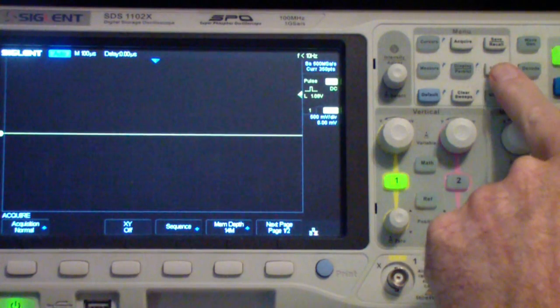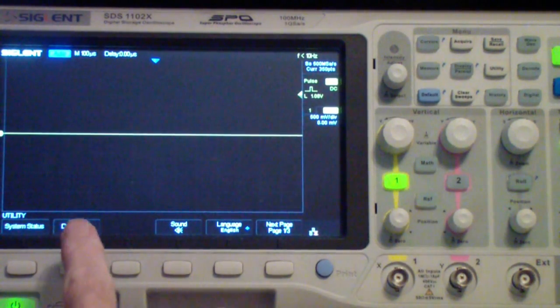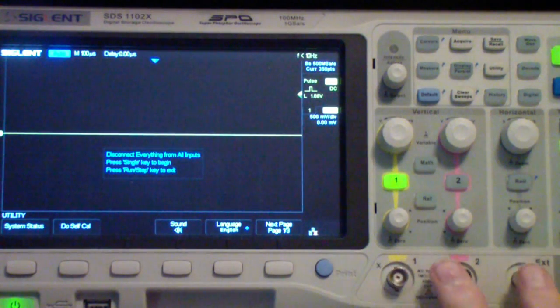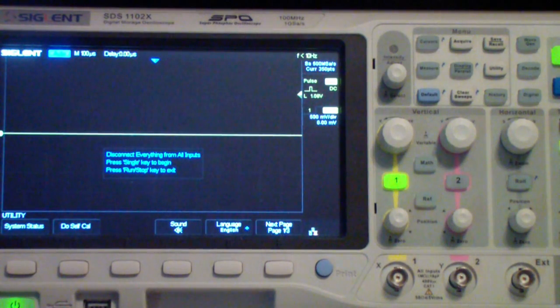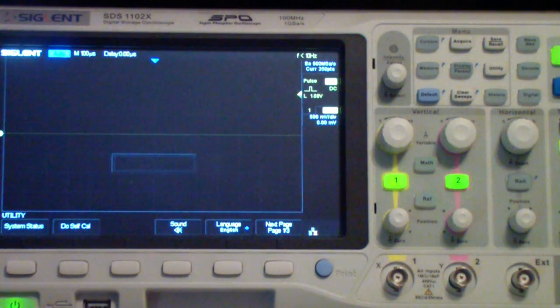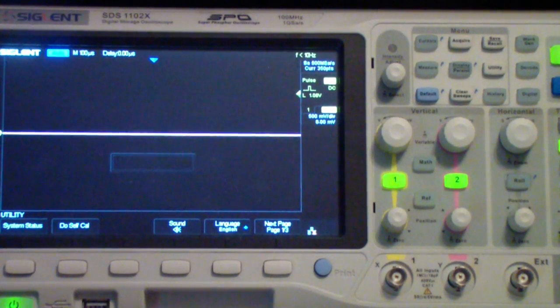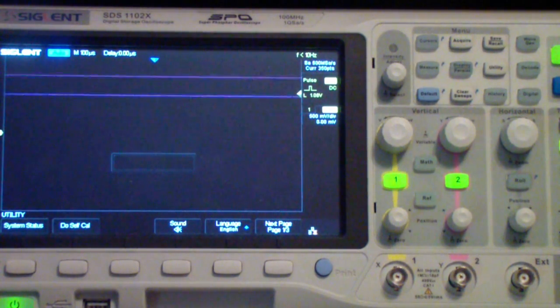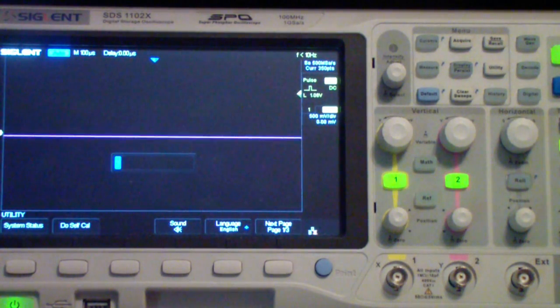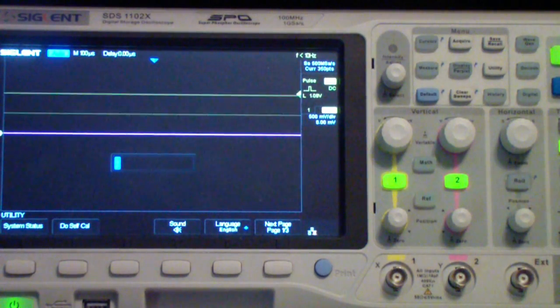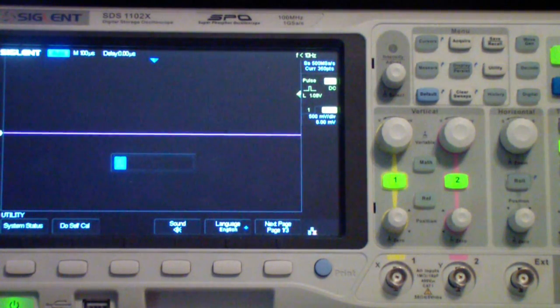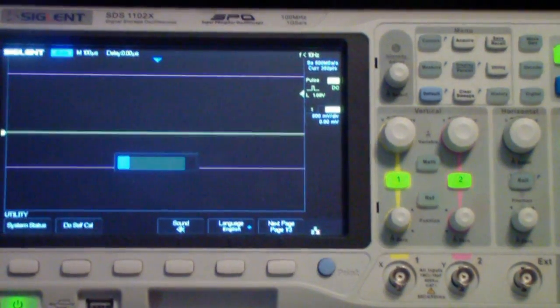The first thing we do is we go to the utility menu and then down here where it says do self cal, press that and it tells us to disconnect everything which I've done and then to press single which is the acquire button over here or trigger button and it begins to do the calibration. Now, I won't bore you with watching it go through all of this, but just notice that one of the things it's doing is it's moving each channel through its range and it does this many many times. But for now, I'm going to pause the video.